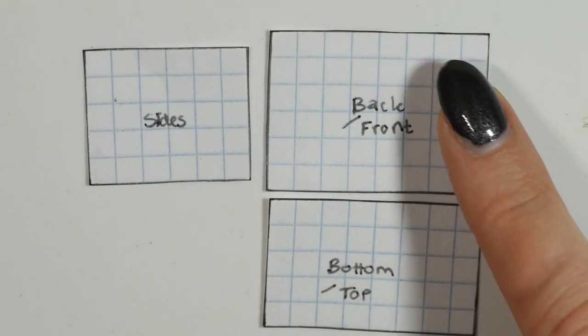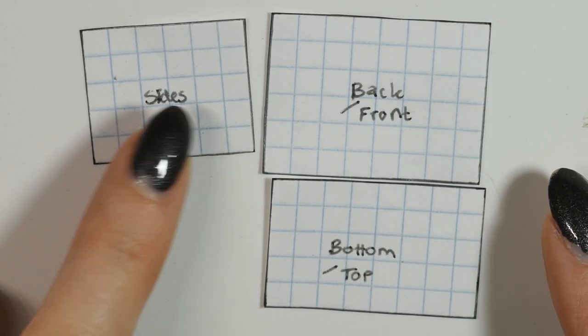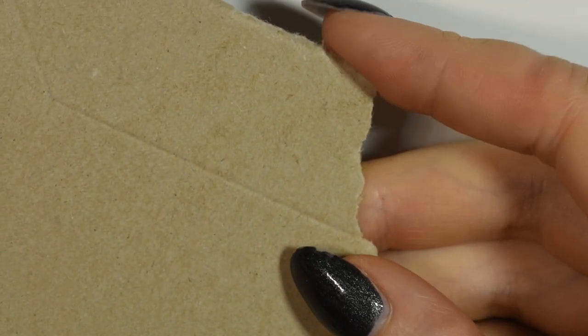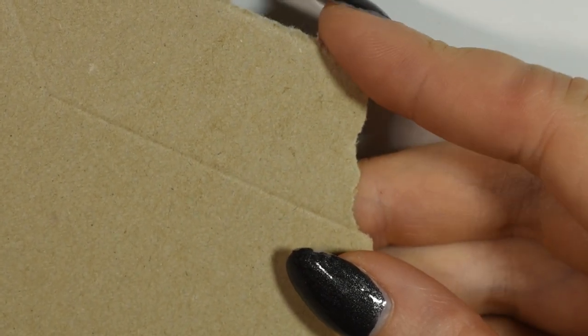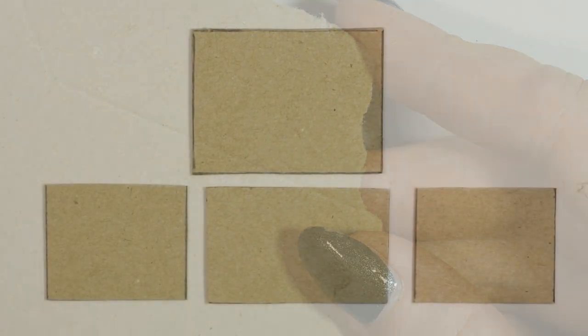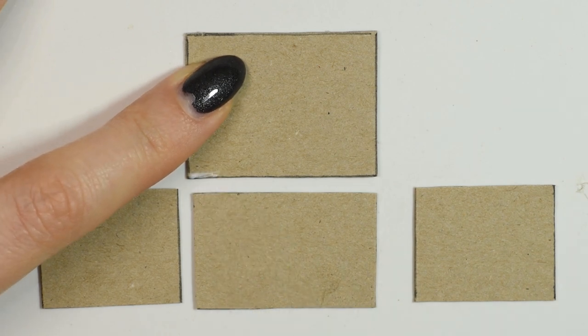To start out I made a sketch to see the size I wanted my room, and then I made a stencil for the sides, tops and bottom, and back and front piece. I used some recycled cardstock to cut up my pieces, but if you make your room bigger you might want to use something more sturdy. Then you want to start gluing your pieces together except for the front piece and make your little box.